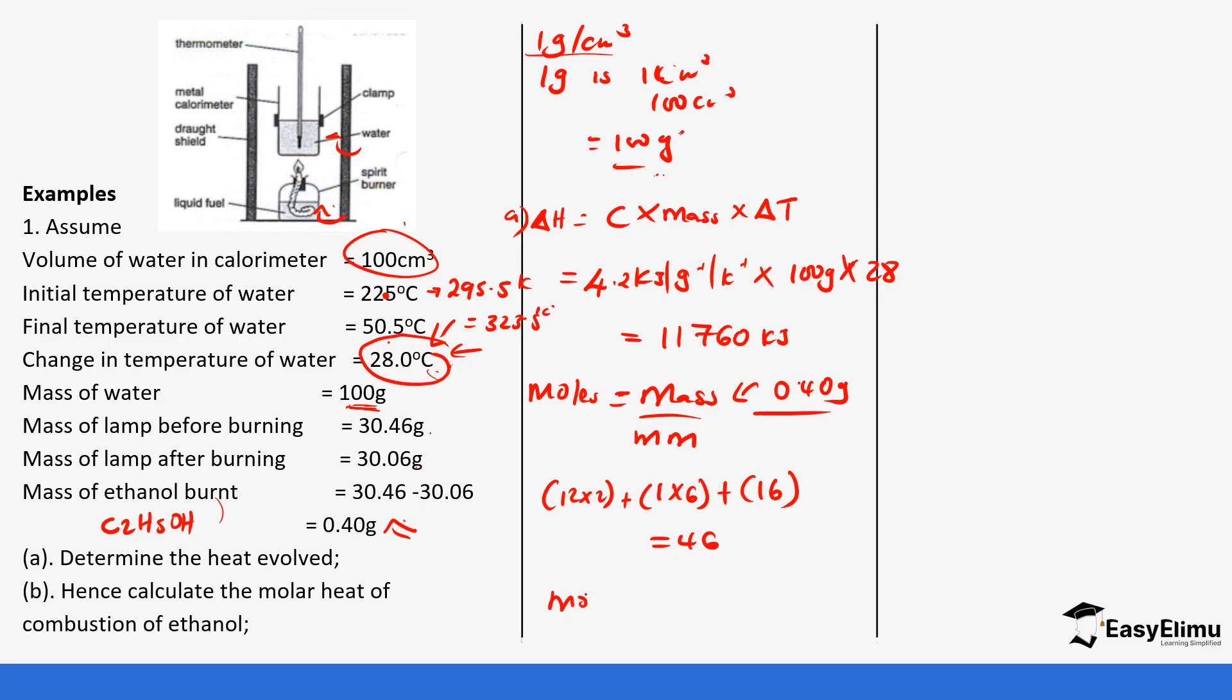So the moles will be 0.4 divided by 46 which gives us 0.009 moles. So we will say if 0.009 moles produces 11760 kilojoules what about one mole? So 11760 divided by 0.009 moles. Do not be surprised at the value and it's per mole and remember it's negative especially if you have used the correct unit. The reason why the value is very big is because we just use the units that we are given.